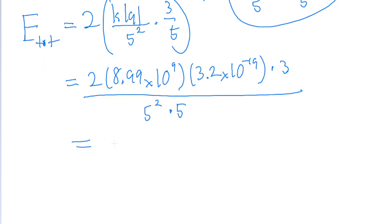then we find a net electric field of 1.38 times 10 to the power of negative 10 newtons per coulomb. And so that is our answer to part a of the problem.